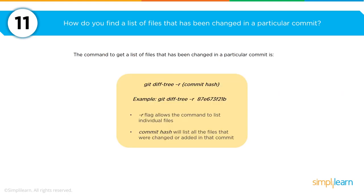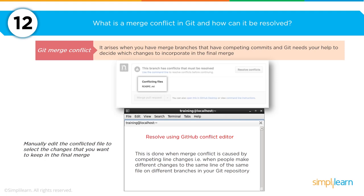You can quickly find all the files used to make a particular commit. When asked how to find a list of files changed in a particular commit, the command is: git diff-tree -r followed by the hash of the commit. That will give you a breakdown of all the files changed with that particular commit.